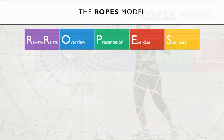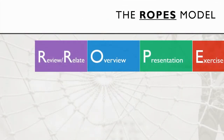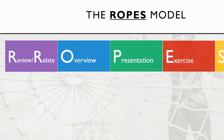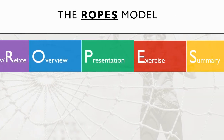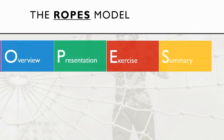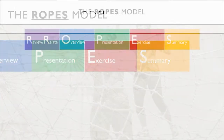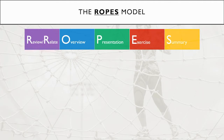The ROPES model stands for Review or Relate, Overview, Presentation, Exercise, and Summary. Each of these represents an important phase as you consider training design. Let's go through each of these.